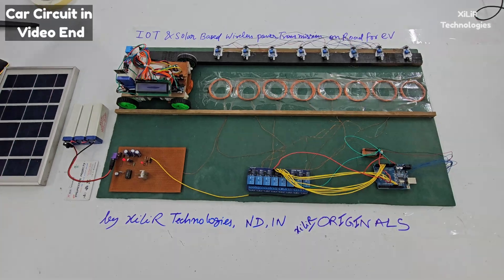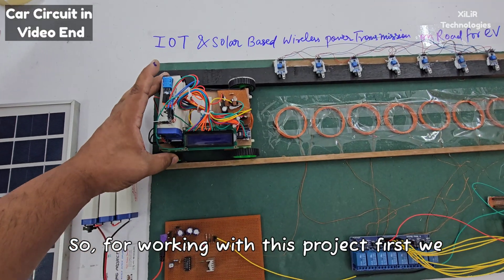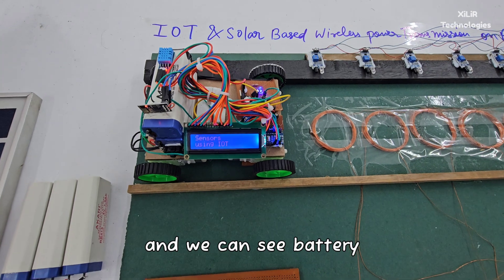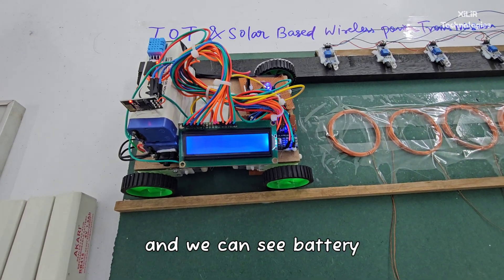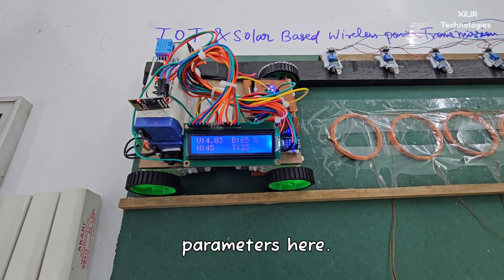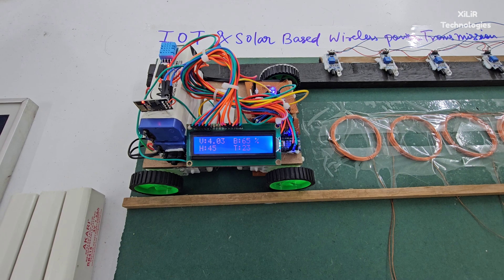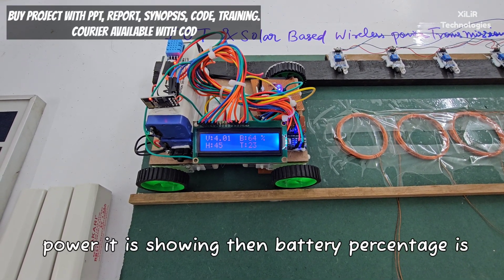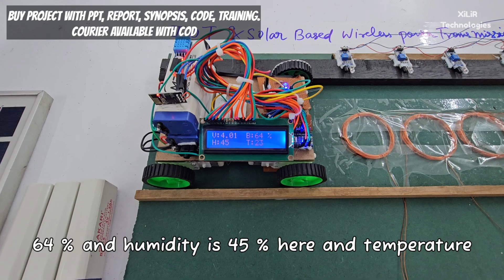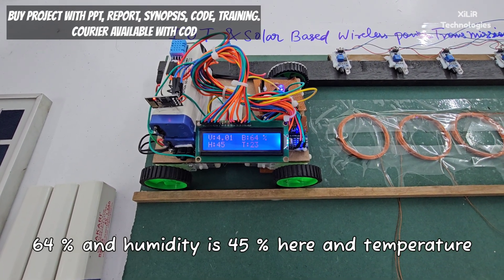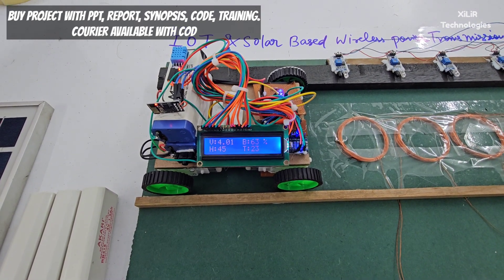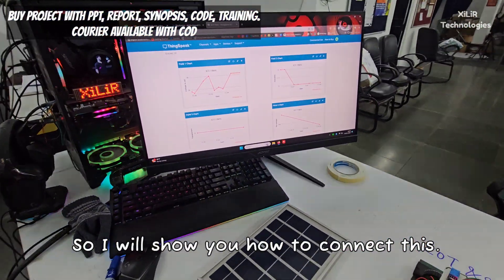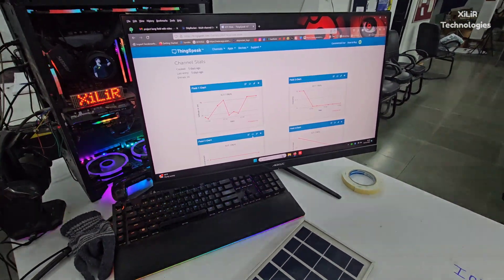Now let's see the working of this project. First we have to turn this on and we can see battery parameters here. It's showing 4 volt battery power, battery percentage is 64, humidity is 45, and temperature of the battery is 23.